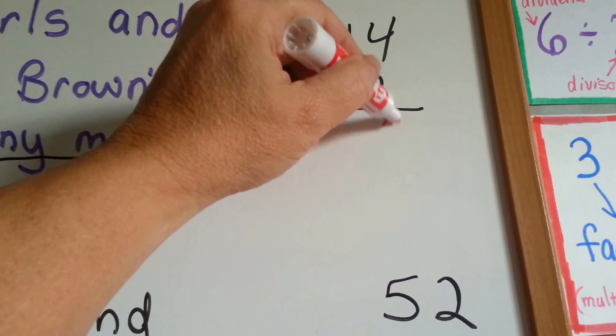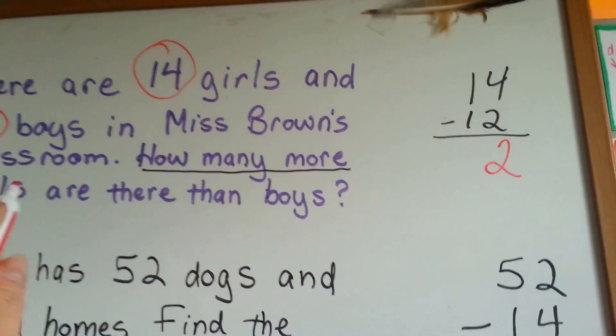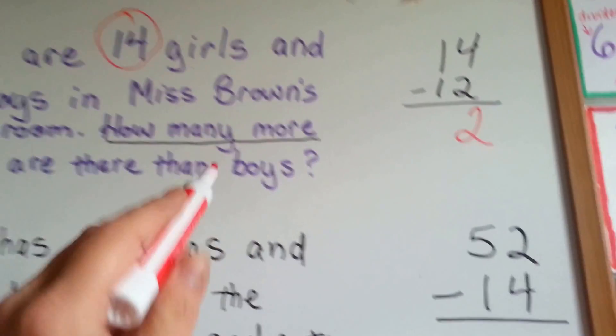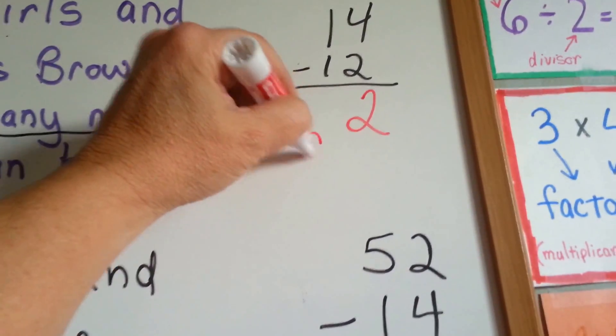4 take away 2 is 2. Don't forget we need to label them. How many more girls? So, the answer would be 2 girls.